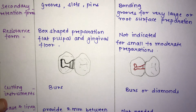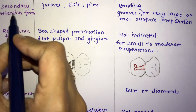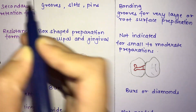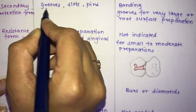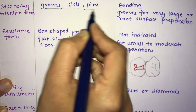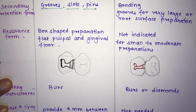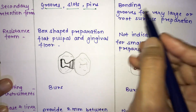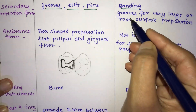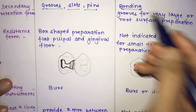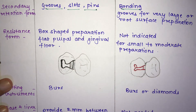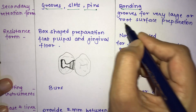The next difference is the secondary retention form. In amalgam, you require grooves, slots, and pins. In composite, secondary retention relies on bonding; grooves are only given for very large preparations or root surface preparations.